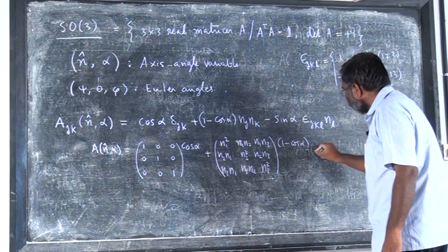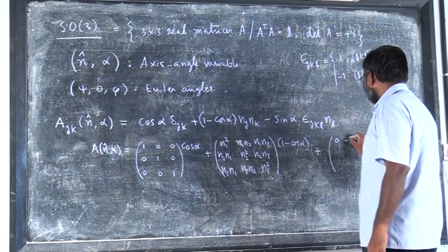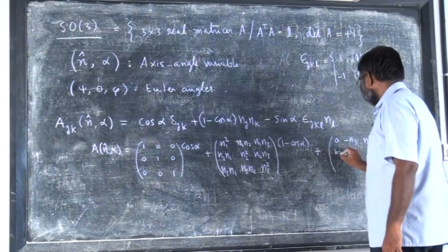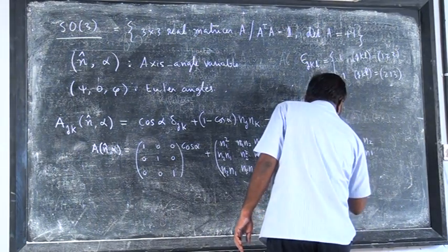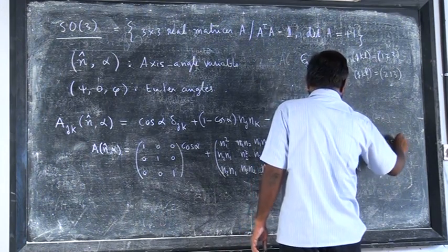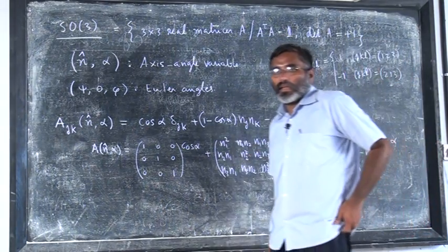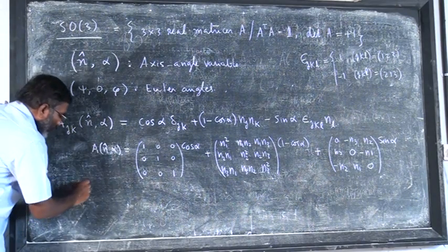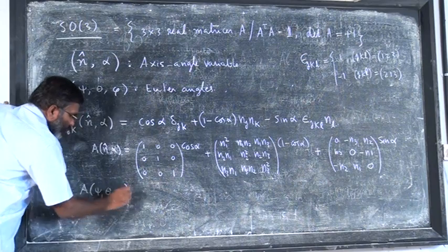Plus a matrix which has [0, -n3, n2; n3, 0, -n1; -n2, n1, 0] times sin(alpha). So this is the general matrix in the axis-angle description.